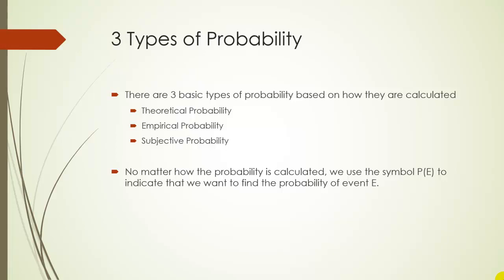No matter how we calculate the probability, we're going to use the symbol P of E to indicate that we want to find the probability of that event E.